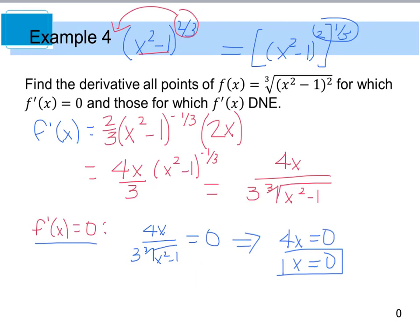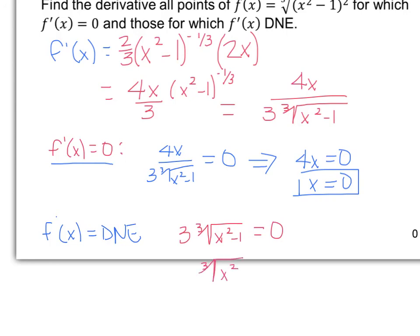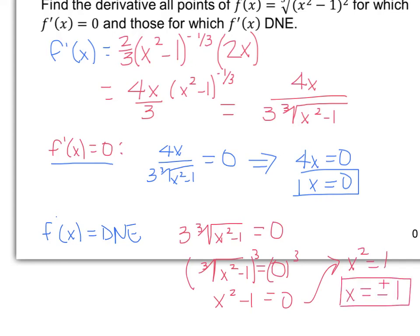To find when the slope or derivative does not exist, I look at the denominator of the derivative and set it equal to zero. So 3 times the cube root of x squared minus 1 equals 0. Dividing by 3: the cube root of x squared minus 1 equals 0. Cubing both sides: x squared minus 1 equals 0, so x squared equals 1, giving x equals plus or minus 1. When x equals positive or negative 1, the derivative does not exist.